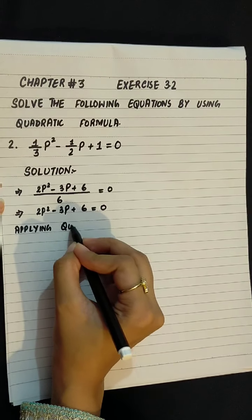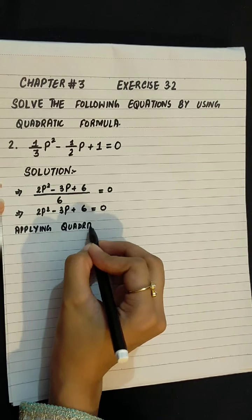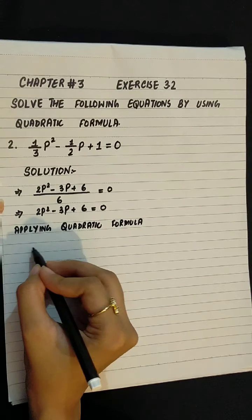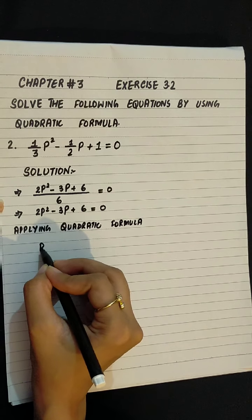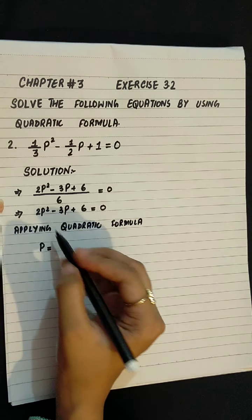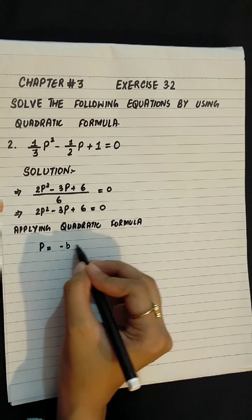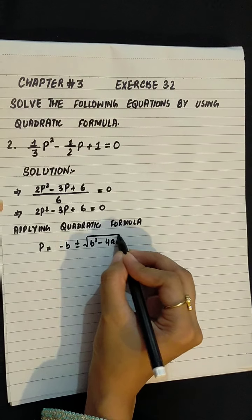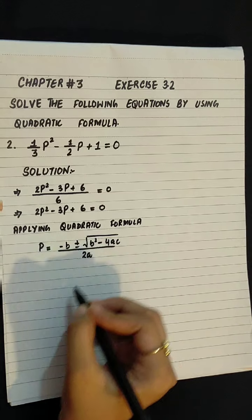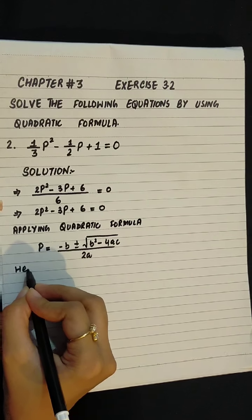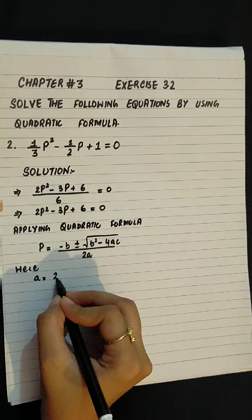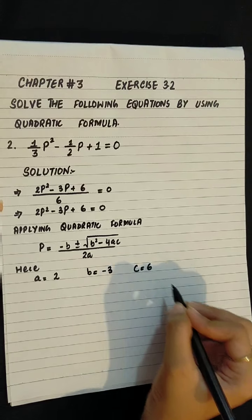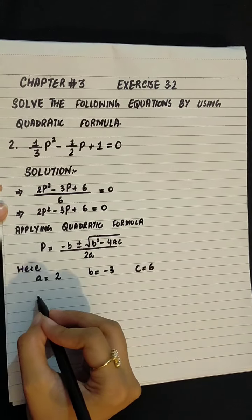If we apply the quadratic formula, p = -b ± √(b² - 4ac) / 2a. Here, a = 2, b = -3, and c = 6.